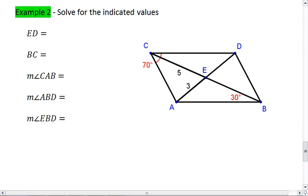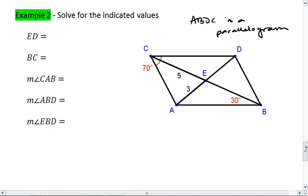And let's look at an example. So in this picture below, and yes, ABDC is a parallelogram, I want you to solve for the indicated values on the left. Given the information, I want you to solve for ED, solve for BC, measure of angle CAB, measure of angle ABD, and the measure of angle EBD. Pause your video, take a moment to do this on your own. When you're ready, resume the video and check your solution.